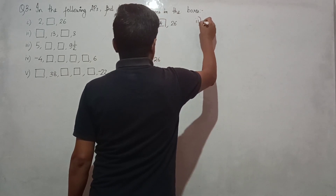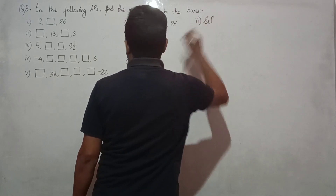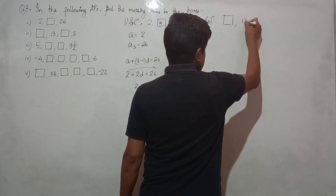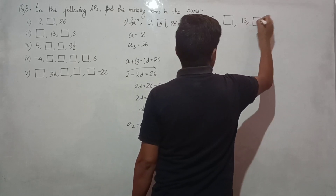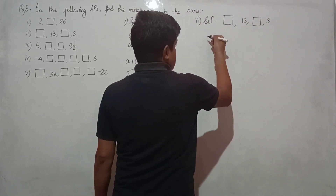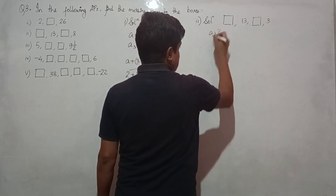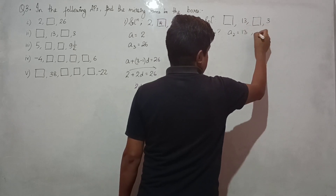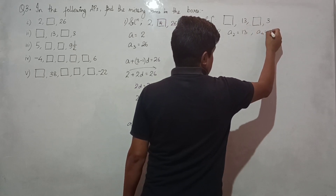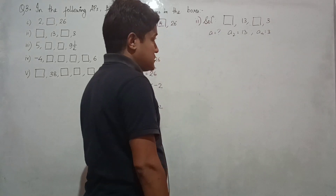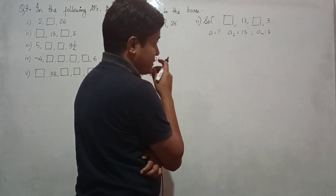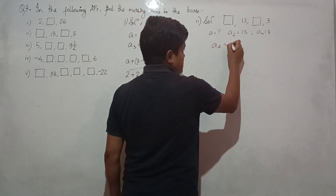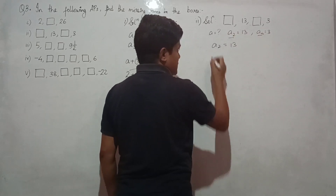Option two solution: the sequence is 13, box, 3. We do not know the first term; the second term is 13, and the fourth term is 3. With this type of question we need to solve a linear equation in two variables.